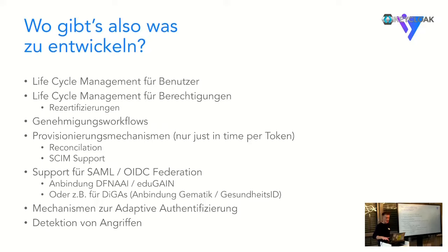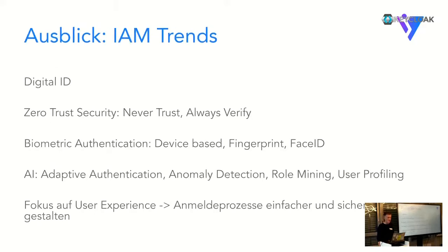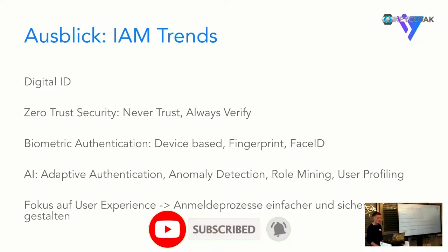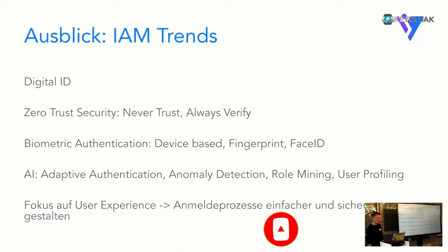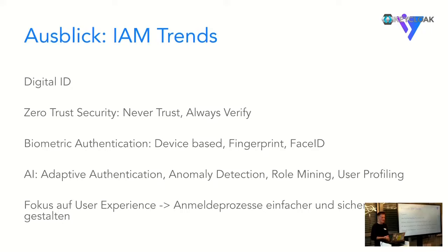Looking at what's coming up in Identity and Access Management in the next year: we have device-bound digital IDs - your personal device or cell phone will be used to log in and authenticate for services. Of course there is more focus on zero trust security to verify user access all the time. Biometric authentication is linked to the digital ID or device as a second factor. AI will also come in, which can be very useful for anomaly detection, adaptive authentication, and role mining.